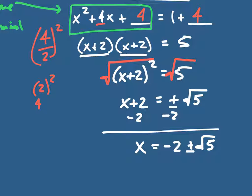We're getting these numbers because I can't take the square root of 5 and get a clean integer — it gives a decimal. This is why we can't factor: we're getting an answer like this. If we could factor it, we'd get nice neat numbers, but since we can't, we get irrational solutions like that.